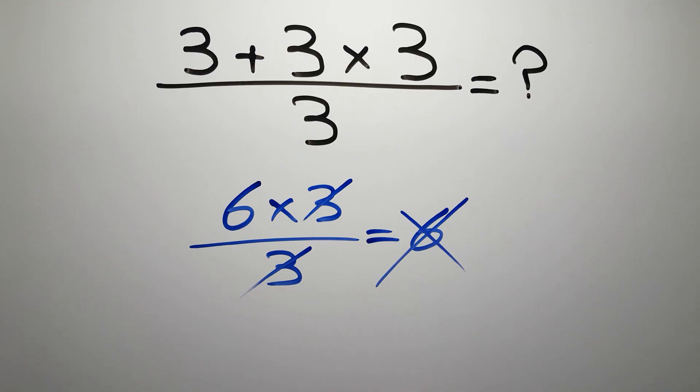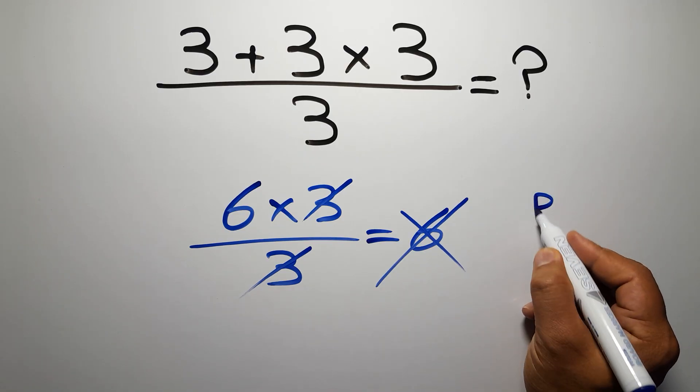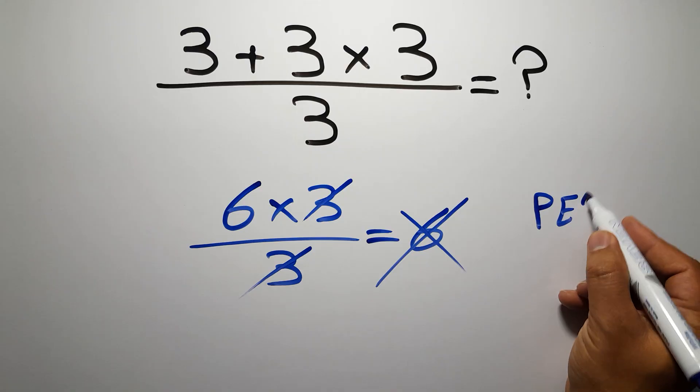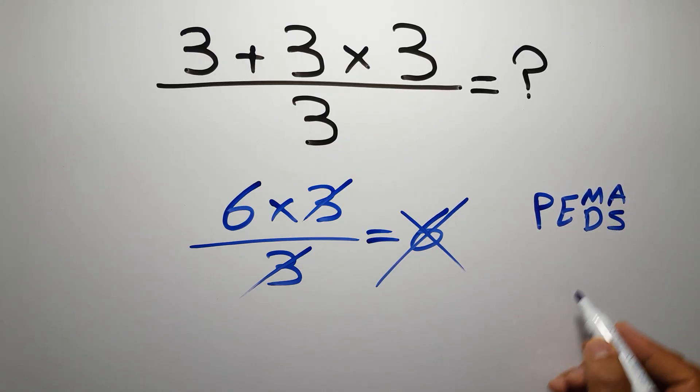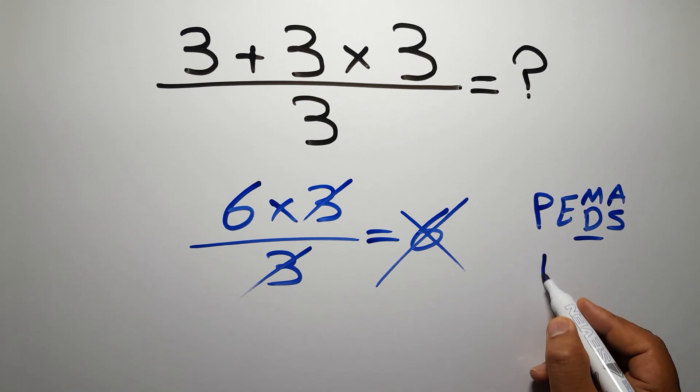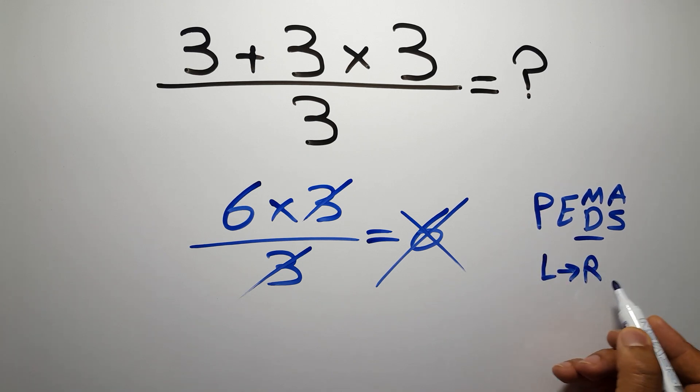Because according to the order of operations, first we have to do parentheses, then exponents, then multiplication or division, and finally addition or subtraction. Remember that multiplication and division have equal priority and we have to work from left to right. And the same applies to addition and subtraction.